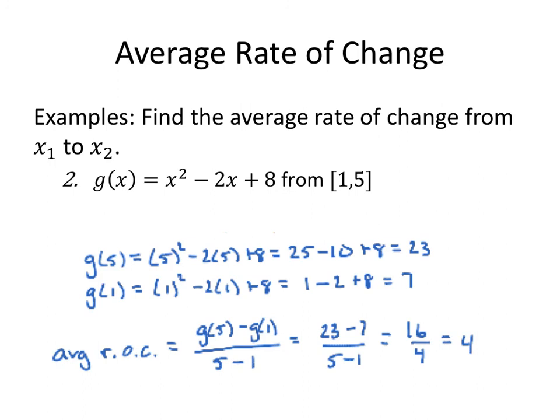Let's find the average rate of change from 1 to 5 for the function g of x given by x squared minus 2x plus 8. From 1 to 5. So I'll find g of 5, which is 5 squared minus 2 times 5 plus 8, which is 25 minus 10 plus 8. That's 15 plus 8, which is 23. g of 1, 1 squared minus 2 times 1 plus 8, evaluating my function. 1 minus 2 plus 8, that's a negative 1 plus 8, which is 7.